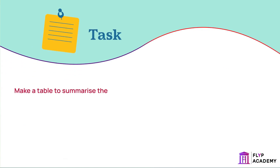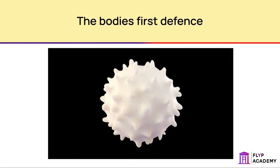Make a table to summarise the ways the body can stop pathogens from entering. The body's first defence is the skin, a waterproof covering over nearly the whole body. This provides a physical barrier that prevents pathogens from entering. Most pathogens cannot penetrate the skin. When a break in the skin occurs, scabs form over the gap and protect the body. The skin also secretes oils, chemicals, and sweat that can inhibit or kill pathogens.